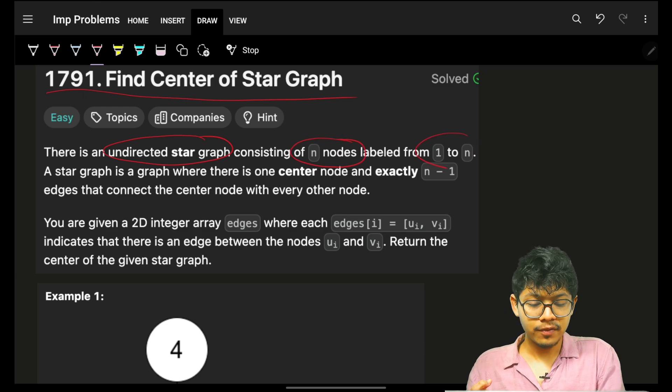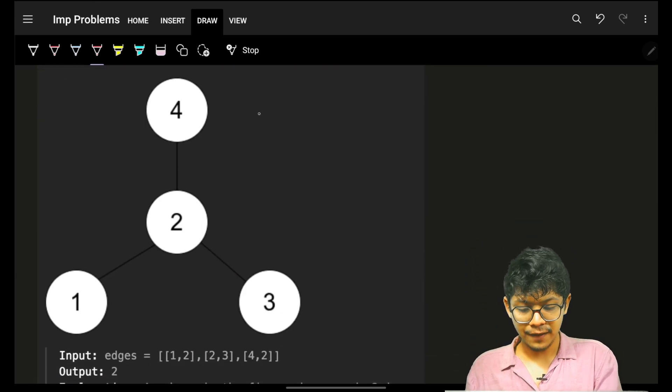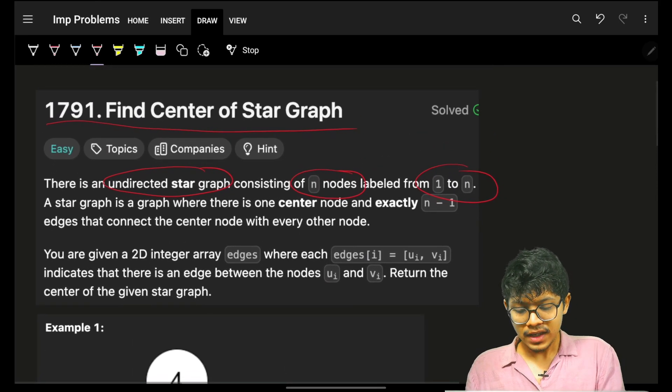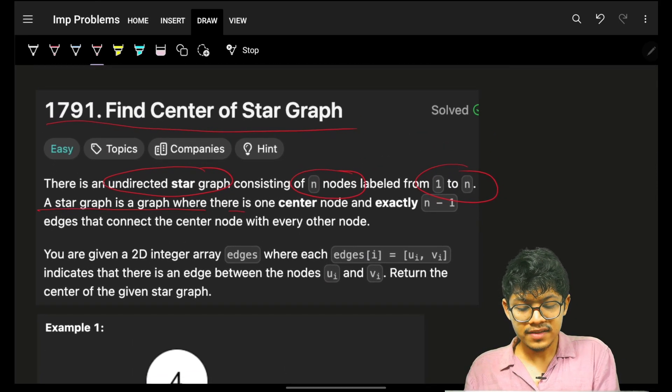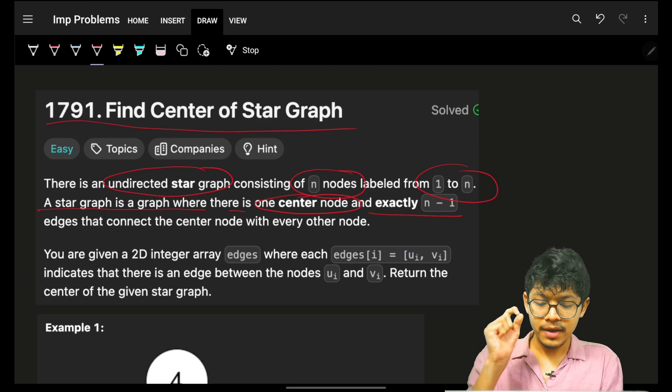As you can see, I have four nodes labeled from 1, 2, 3, 4. A star graph is a graph where there is one center node and exactly n minus 1 edges that connect the center node with every other node.